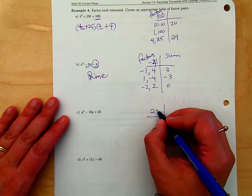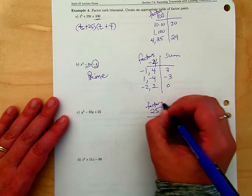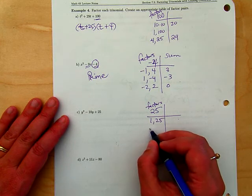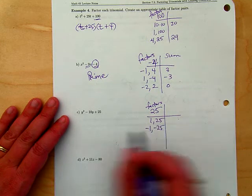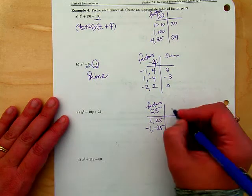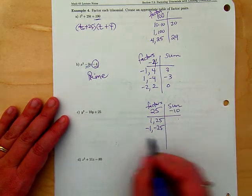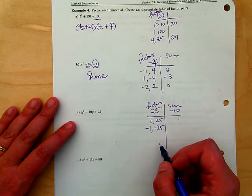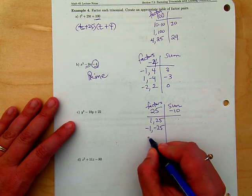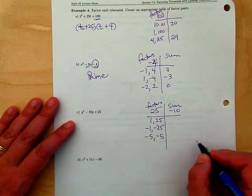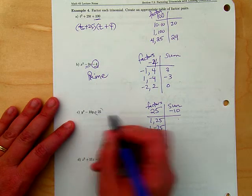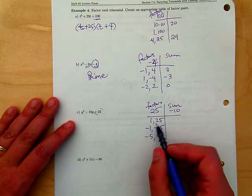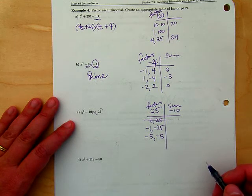Looking for factors of 25: 1 times 25, negative 1 and negative 25, because you might have noticed since I do need a sum of negative 10, I would really need two negative numbers. This positive tells me I have to have the same signs. The middle number tells me I need a negative, so I can eliminate the possibility of using positives.